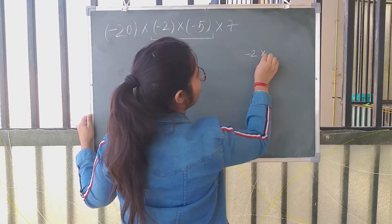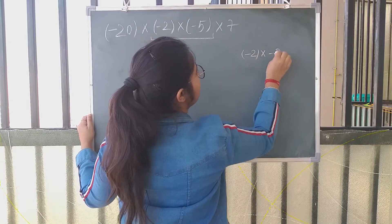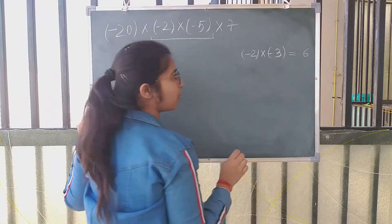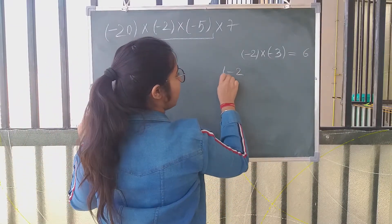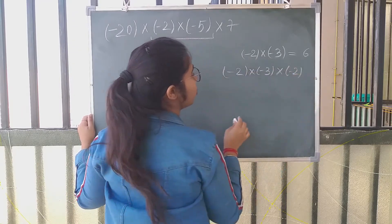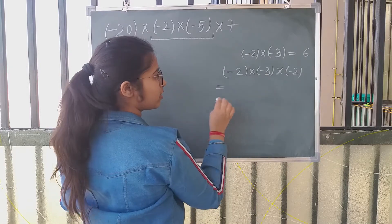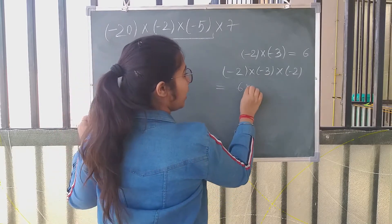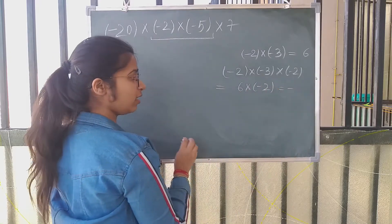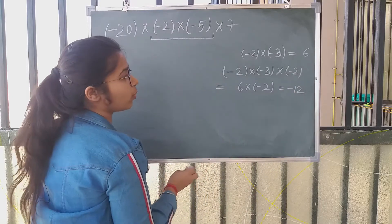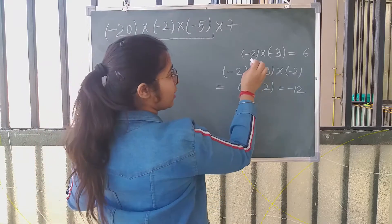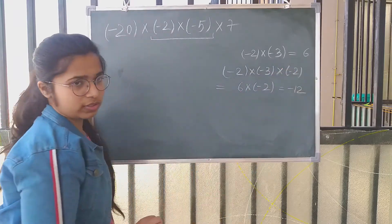But if there are an even number of negative numbers, there will be a positive answer. For example, minus 2 into minus 3 gives plus 6, since there are two (even) negatives. But if I solve minus 2 into minus 3 into minus 2 — that is three (odd) negatives — minus 2 into minus 3 is plus 6, then plus 6 into minus 2 gives minus 12. So, when there are odd negative numbers you get a negative answer, and when there are even negative numbers you get a positive answer.